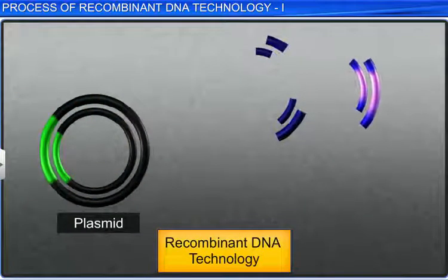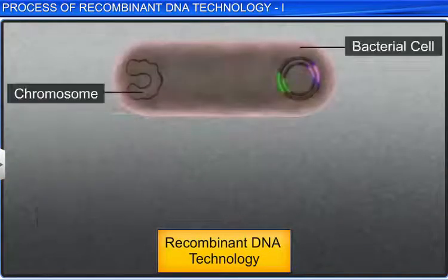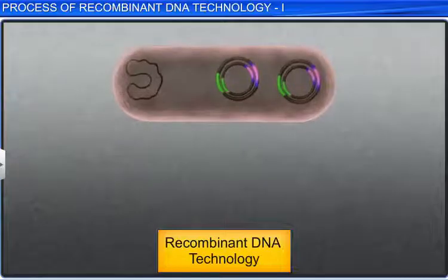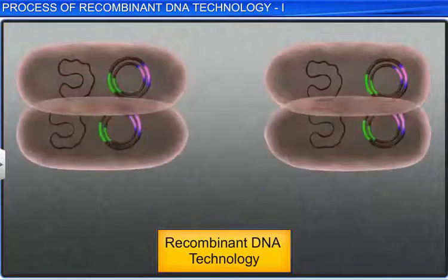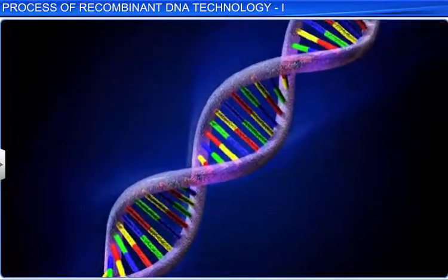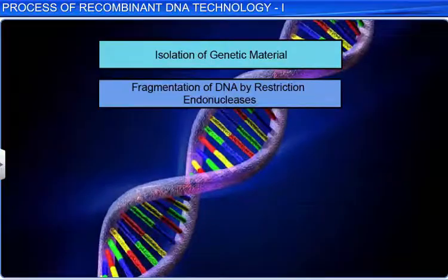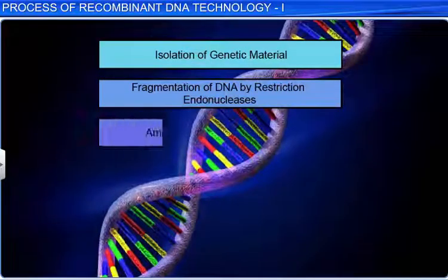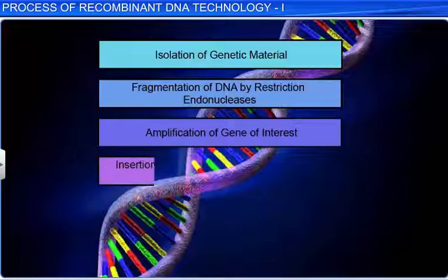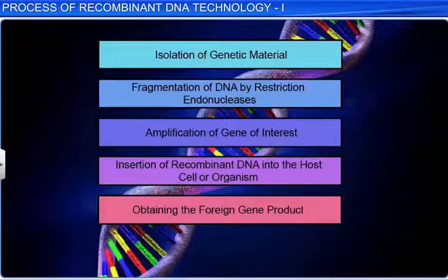Recombinant DNA technology is a sophisticated process involving many steps. In order of sequence, these steps are: isolation of genetic material or DNA, fragmentation of DNA by restriction endonucleases, amplification of the gene of interest, insertion of recombinant DNA into a host cell or organism, obtaining the foreign gene product, and downstream processing.